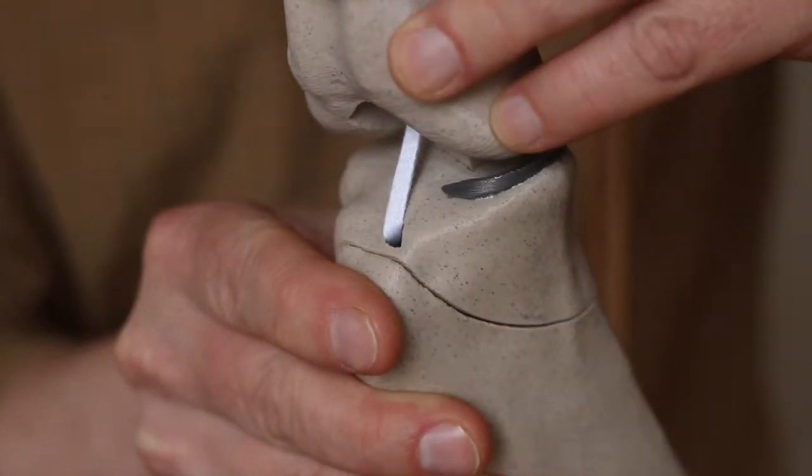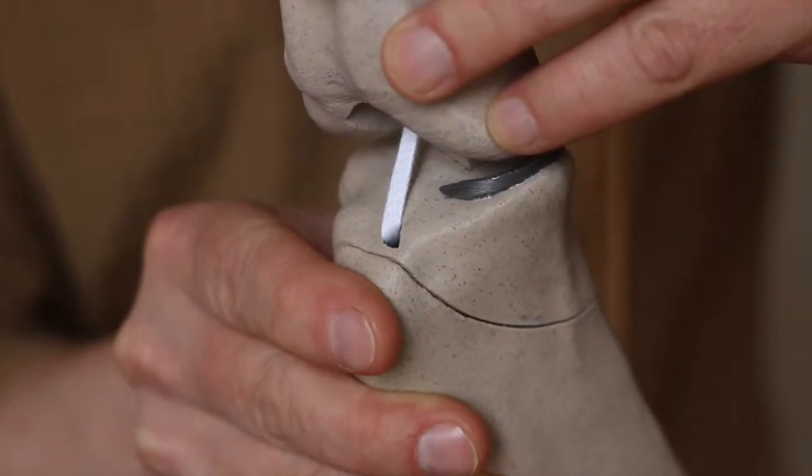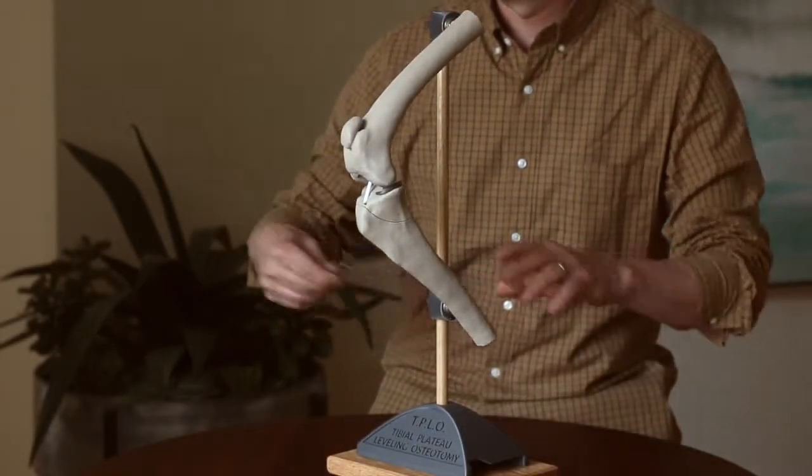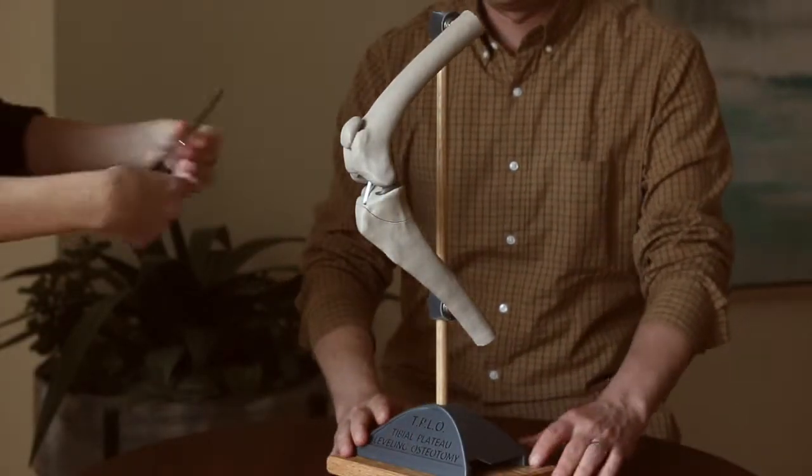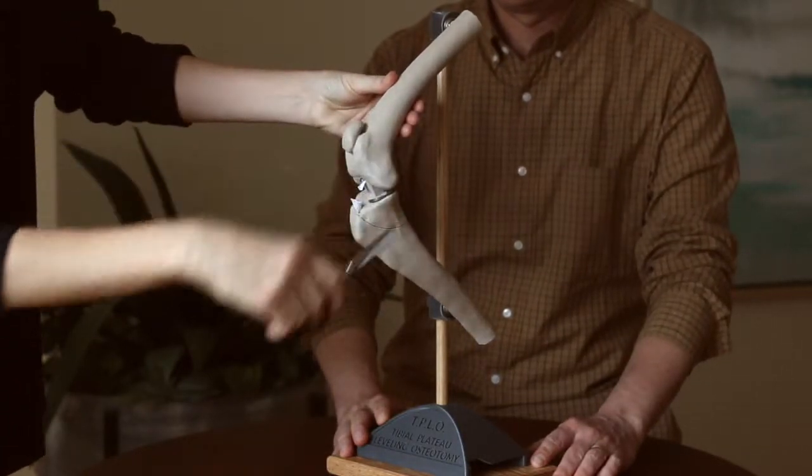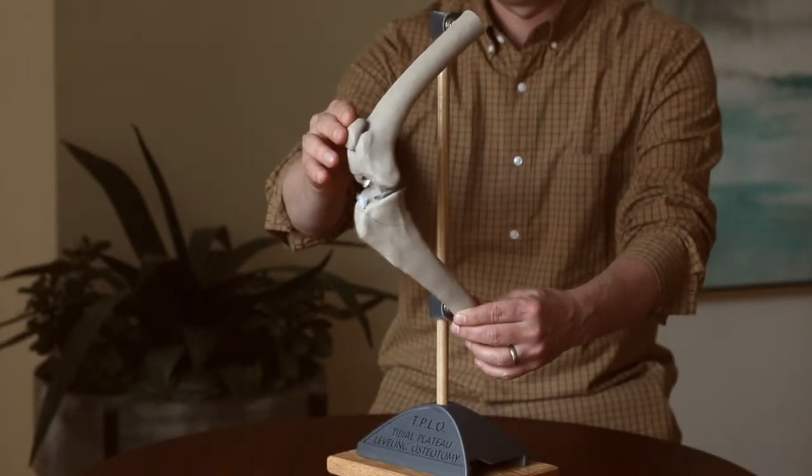We can simulate tearing of the ligament by cutting it, and you can see when that ligament is cut, immediately you begin to get this shifting in a front-to-back direction. In people and in dogs as well, this is called drawer motion, like a drawer going in and out.